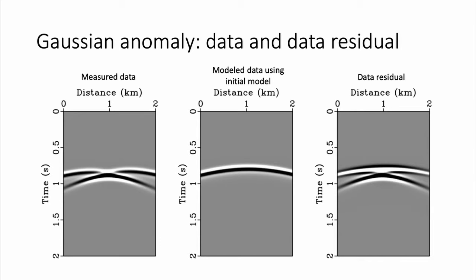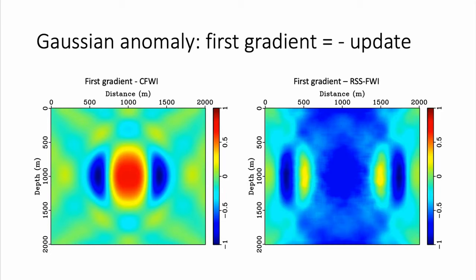Putting the initial data residual into both algorithms, the conventional FWI gradient on the left suggests increasing velocity in the center, whereas our algorithm tells you this should be a slower velocity area. Both will decrease the objective function — they are different paths in high-dimensional space. After 200 iterations at the lowest frequency band (5–10 Hz), conventional FWI shows high wave number features creeping in, while our method produces a smooth update focused on the center, correctly indicating lower velocity than the 3 km/s background.